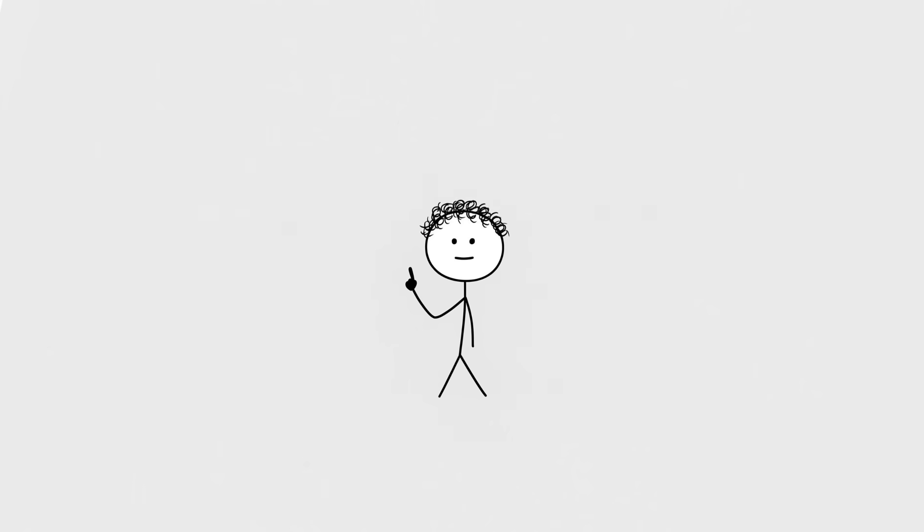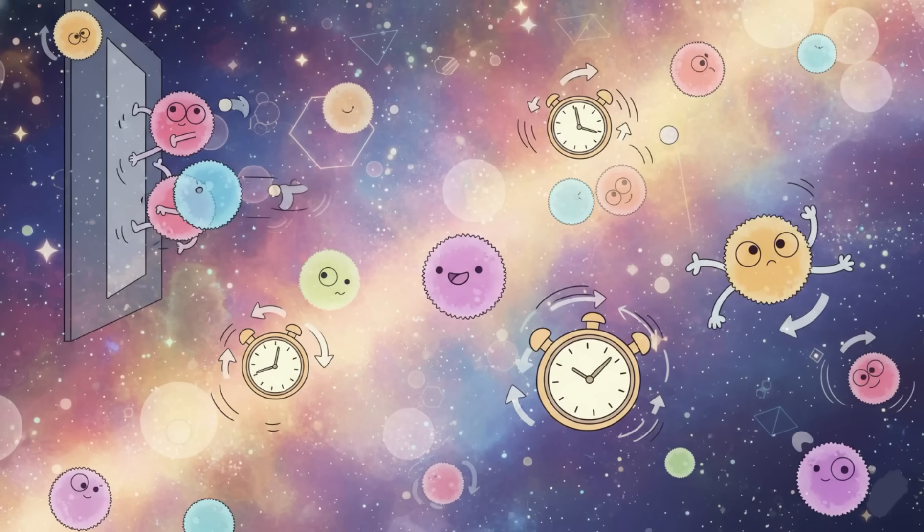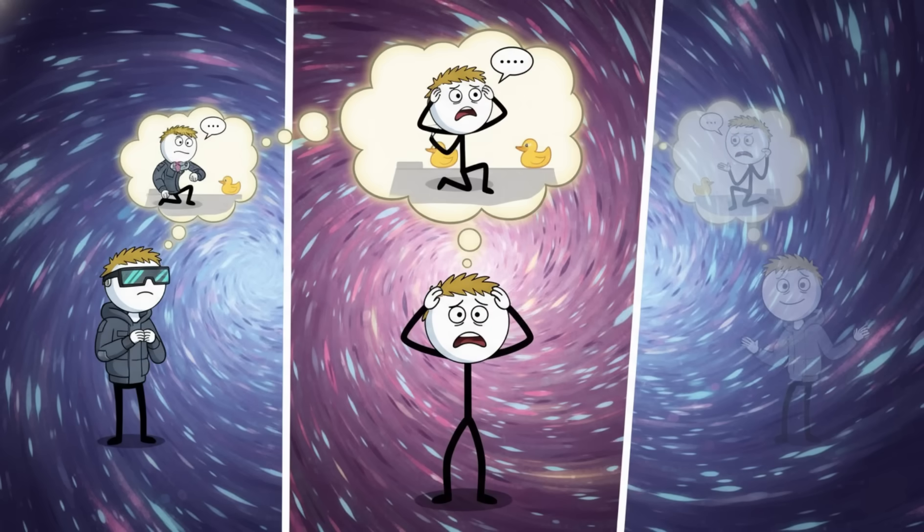Others think the arrow of time only exists because entropy, the universe's love of messiness, keeps increasing. Basically things fall apart and time is just the scorekeeper. And then we get quantum mechanics, the part of science that shows up wearing clown shoes and a cape. On the quantum scale, particles don't seem to care about time at all. They behave the same forward or backward. Some interpretations even suggest the future can influence the past, which is rude and confusing.